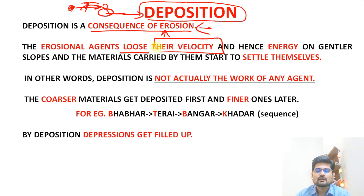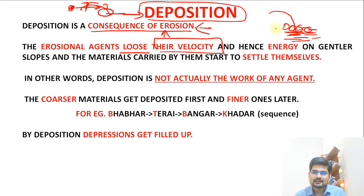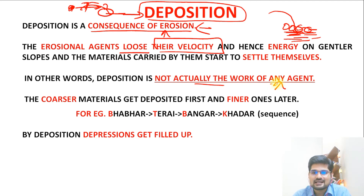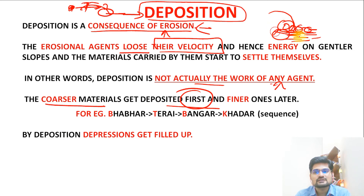Deposition occurs when erosional agents lose their velocity. If water or air decreases in velocity, it no longer has the energy to carry material further, so it gradually settles — this is sedimentation. In the aeolian process, sand dunes form; in the fluvial process, a delta forms. Coarser, heavier materials are deposited first, then progressively finer material settles afterward.